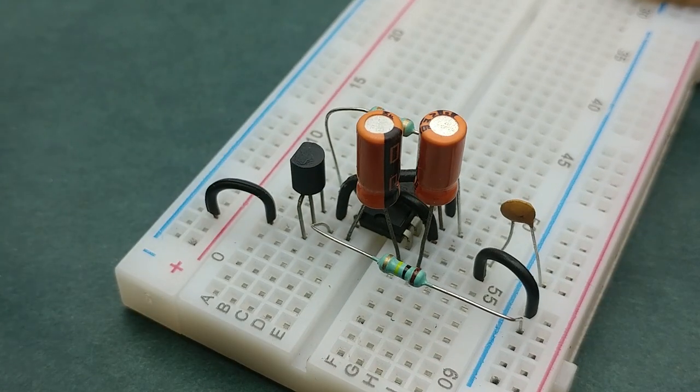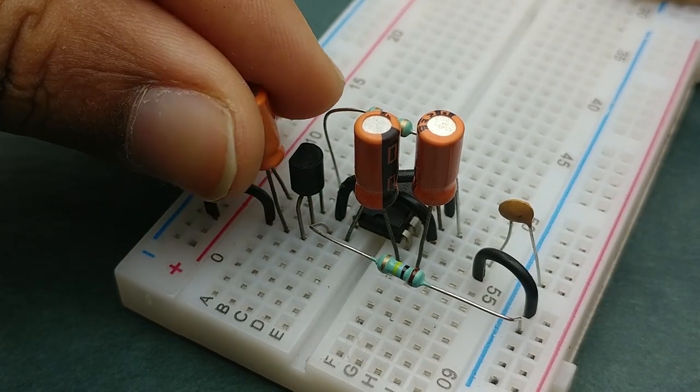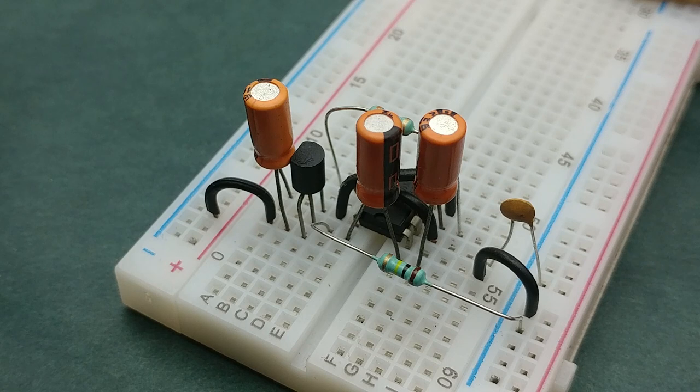Now place a 100 microfarad capacitor on the breadboard such that its positive terminal is connected to the emitter pin of transistor and its negative terminal is connected to the collector pin.